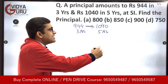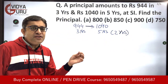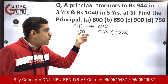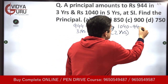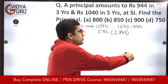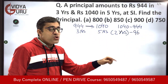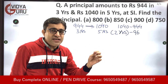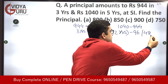In two years' time, what is the interest that we have earned? 1050 minus 944 — that is the total interest which has been earned in two years. So in two years the interest earned is 96. That means in one year: the interest earned in two years is 96, so per annum the interest earned is 48 rupees.